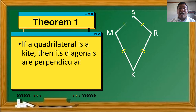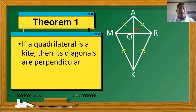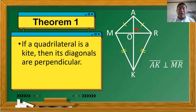Let's take a look at this kite — Kite M-A-R-K with diagonals A-K and M-R. They intersect at point O. Since these diagonals are perpendicular, they form a right angle, and we can say that segment A-K is perpendicular to segment M-R.